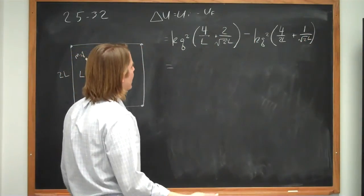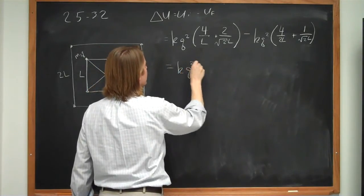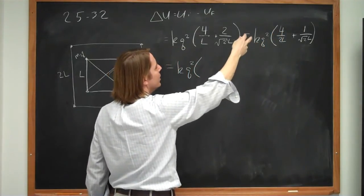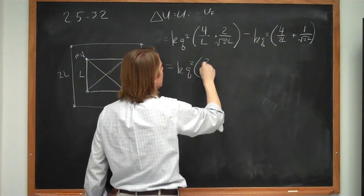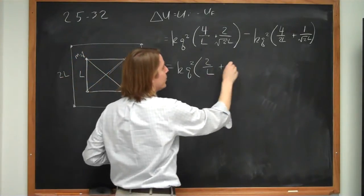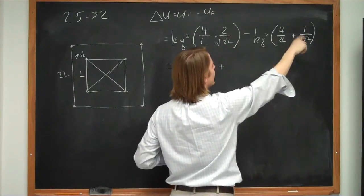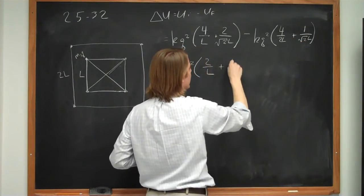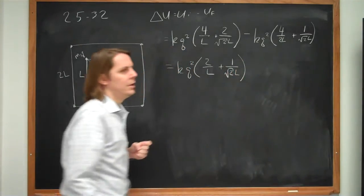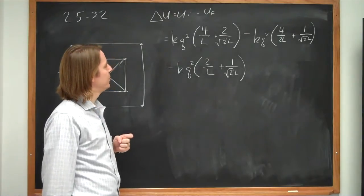Or you can subtract it by hand if you want. But this is going to be equal to kq squared. So we have 4 over l minus a half of 4 over l. What is that? That's 2 over l. And then this term plus 2 over root 2l minus 1 over root 2l is plus 1 over root 2l. That is your lost potential energy.